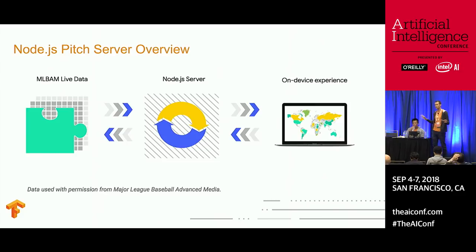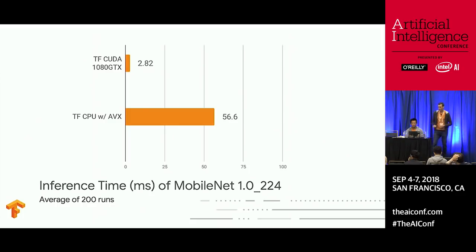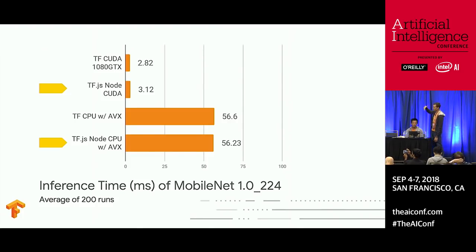On Node.js performance: the Node runtime is just as fast as the Python runtime for MobileNet inference, because we're using the same C library that Python uses.